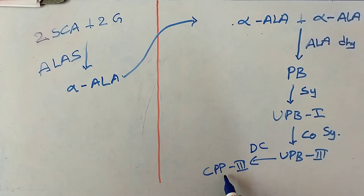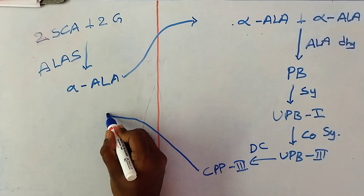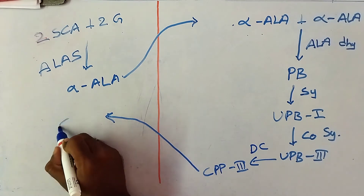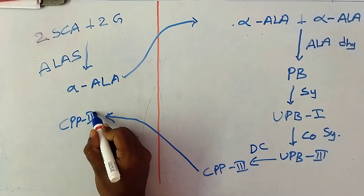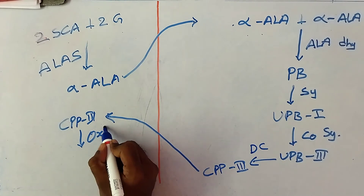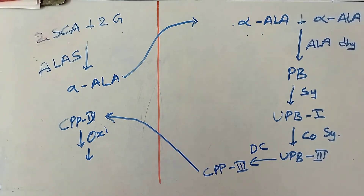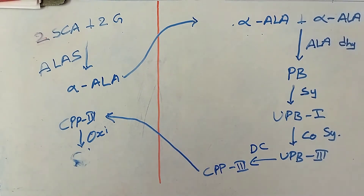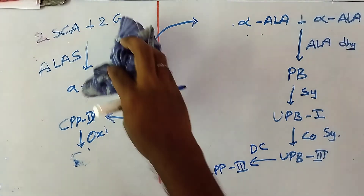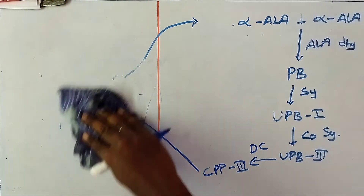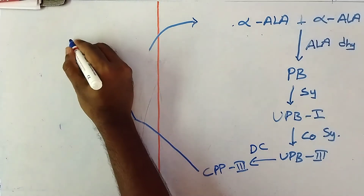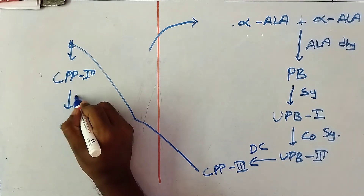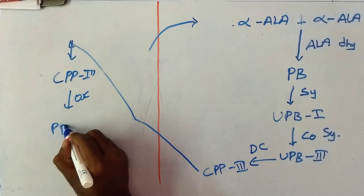CPP3 is again transported into the mitochondria. In the mitochondria, CPP3 undergoes oxidase to form protoporphobilinogen, that is PP9.